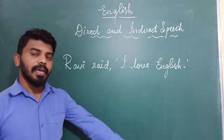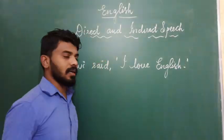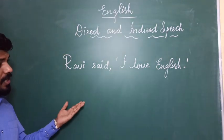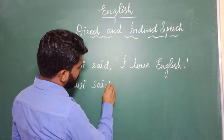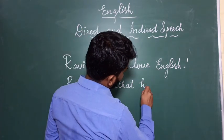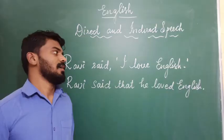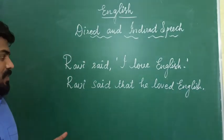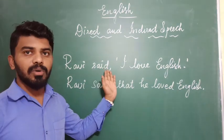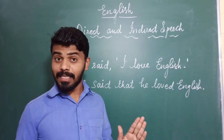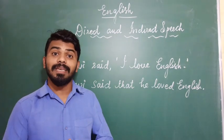Here is a sentence: Ravi said, 'I love English.' It is a direct speech because it is quoted — we have put the sentence in quotation marks. Now I am going to convert this into indirect speech. The sentence has been converted: Ravi said that he loved English. So there are many changes in the sentence, but both sentences mean the same thing.